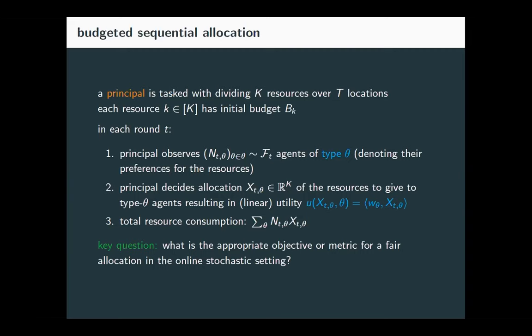After the allocation is decided, the total resource consumption is simply the sum of all things allocated in that round. That's the overall way we've modeled the problem. We now need to figure out how to set up the objective or metric that captures what's a fair allocation in the online stochastic setting. Before continuing, let me check if there are any questions about the model.